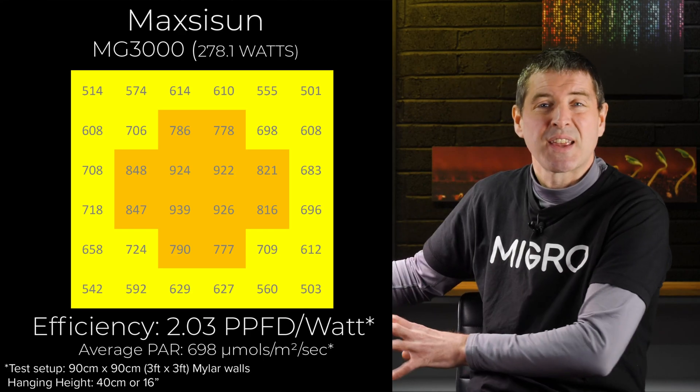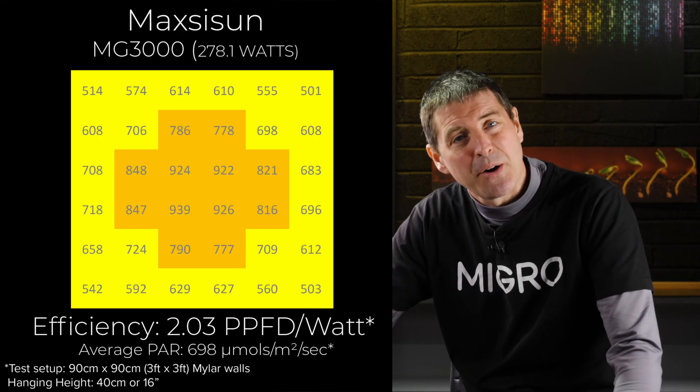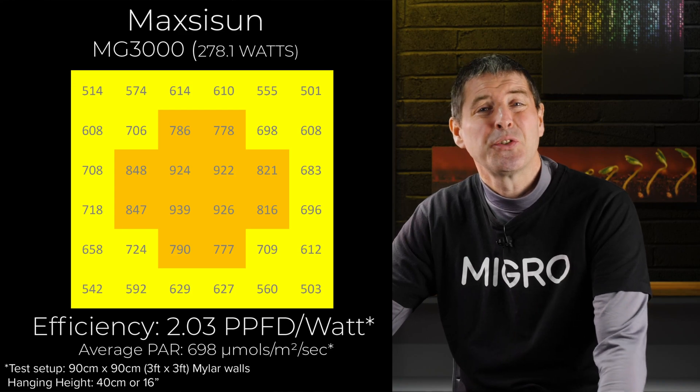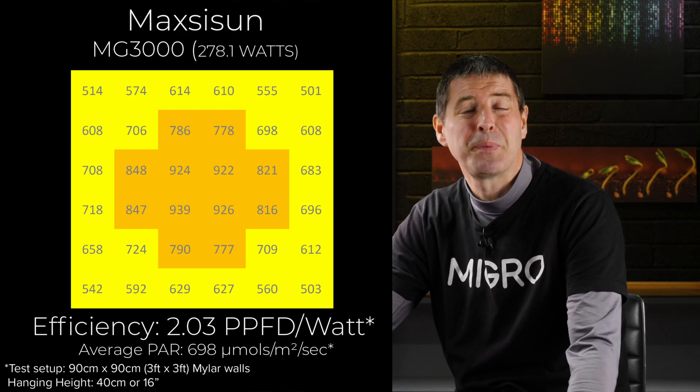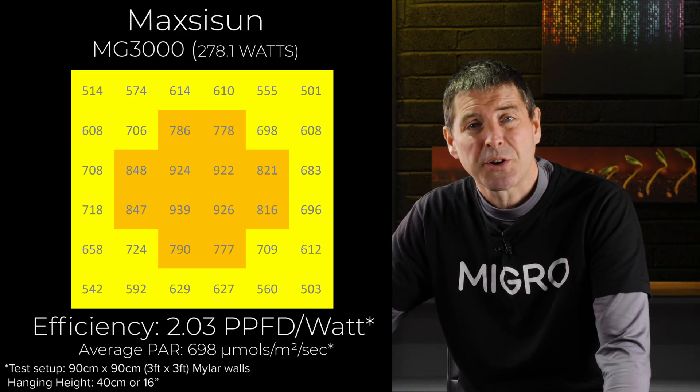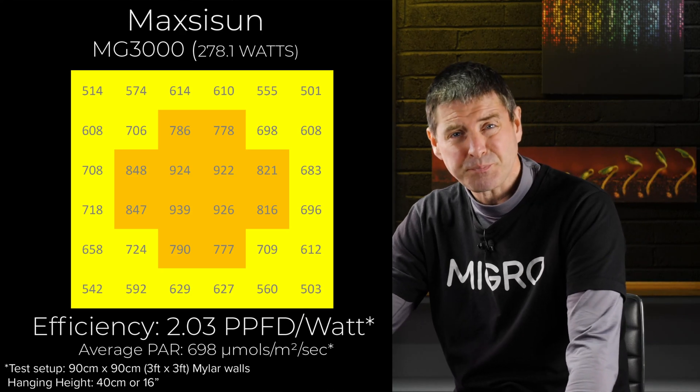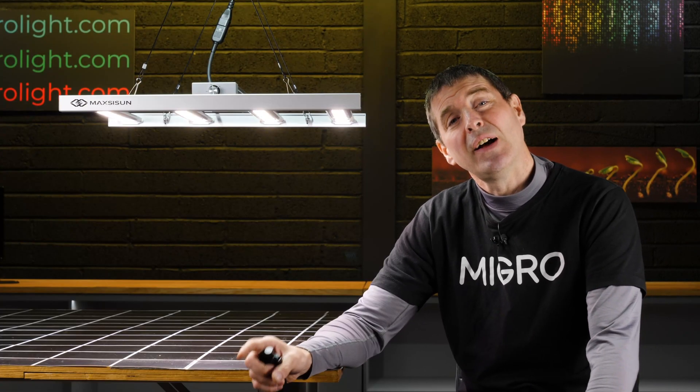The system efficiency, that is the total amount of power reaching the canopy divided by the power consumed, is 2.03 micromoles per watt or PPF usable PPF per watt, which is a really good result particularly when you see the value of this light.